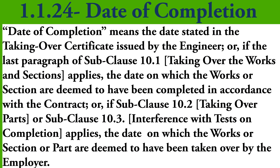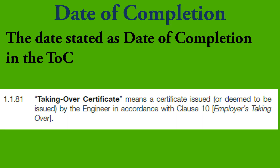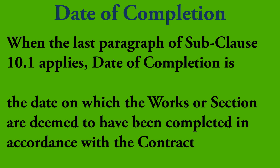As you can see, there are four instances that relate to Date of Completion. The first one is simple: the date stated as Date of Completion in the Taking Over Certificate, or TOC, issued by the engineer. The second instance is if the last paragraph of sub-clause 10.1, Taking Over the Works and Sections, applies — the date on which the works or section are deemed to have been completed in accordance with the contract.